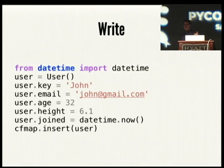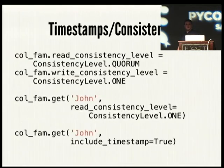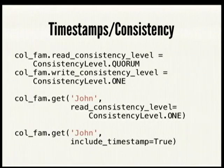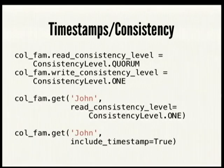The only special thing required is an attribute called 'key', which is the key used for the key-value storage. You can access the timestamps on column values by saying include_timestamp equals true on get. And on inserting, you can insert your own timestamp instead of PyCassa just using now — just add an extra parameter to insert.